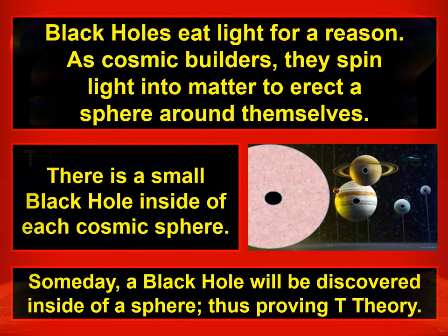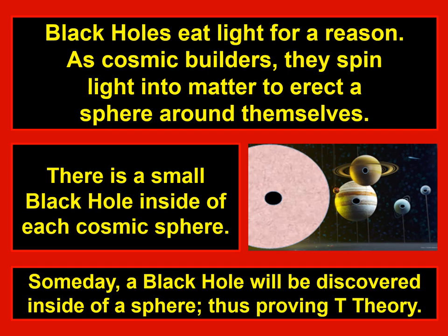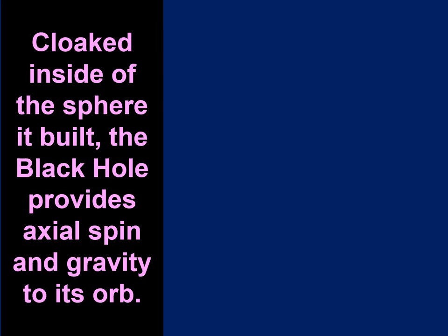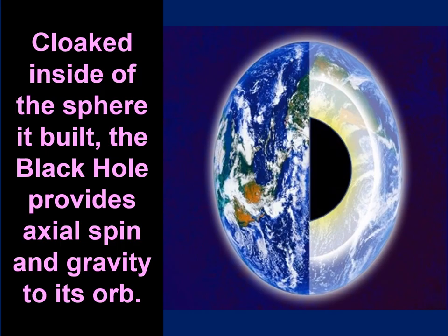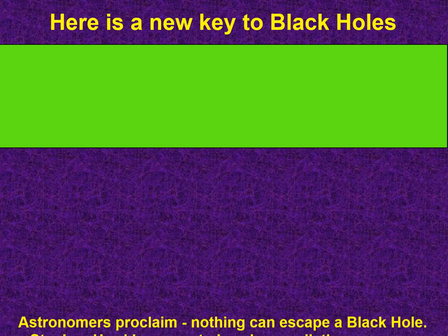We are beginning to see why black holes eat light and what is the difference between a naked black hole and a cloaked black hole. Trillion Theory is the first to discover that black holes eat light for a reason. As cosmic builders, they spin light into matter to erect a sphere around themselves. Thus there is a small black hole inside of each cosmic sphere, and someday a black hole will be discovered inside of a sphere, proving Trillion Theory.